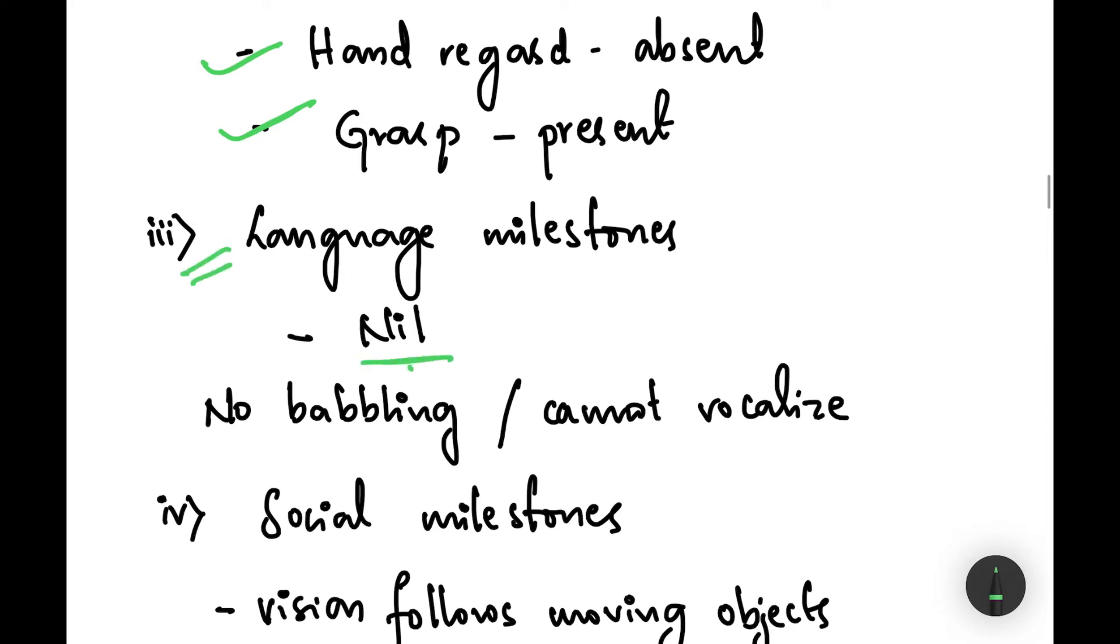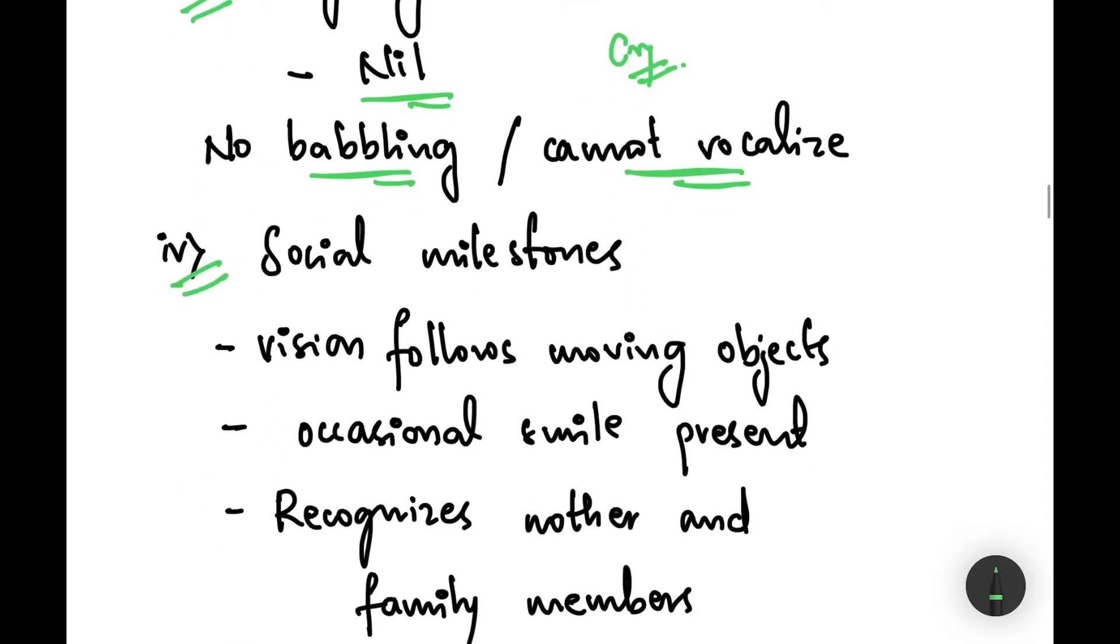Moving on to the language milestones, it is nil. There is not even babbling or vocalizing. The baby just cries. Coming to the social milestones, vision follows moving objects and there is also an occasional smile present. The baby can recognize mother and family members.